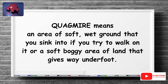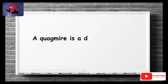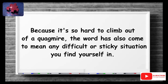Quagmire means an area of soft, wet ground that you sink into if you try to walk on it, or a soft boggy area of land that gives way underfoot. It also refers to a difficult and dangerous situation, or an awkward, complex, or hazardous situation. A quagmire is a dangerous place, like the muddy shoreline of a pond. Because it's so hard to climb out of a quagmire, the word has also come to mean any difficult or sticky situation you find yourself in.